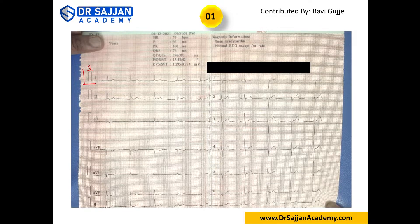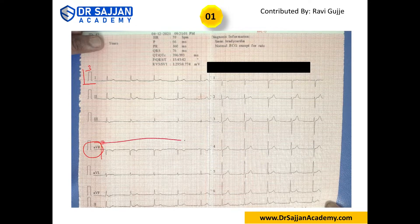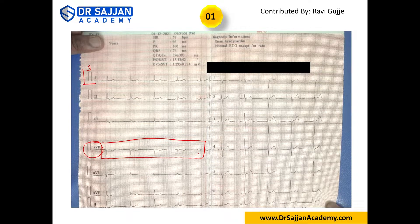The second thing is lead AVR. In lead AVR, we have reversed PQRS — that is how it has to be correct.